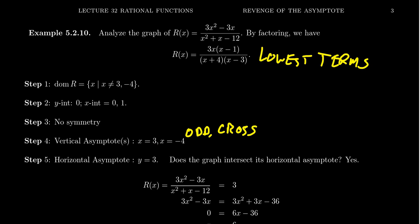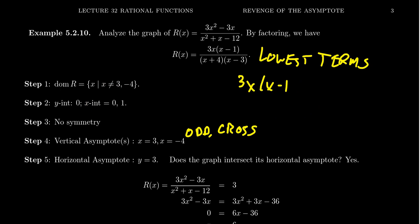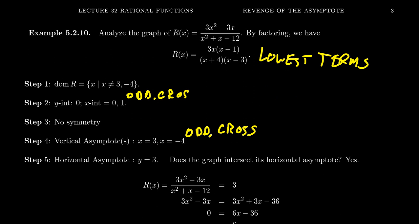For the x-intercepts, we set the numerator 3x(x - 1) equal to zero. By the zero product property, we get x = 0 or x = 1. Both x-intercepts have odd multiplicity, so we cross the x-axis at each value. For the y-intercept, r(0) = 0, so the function passes through the origin — the origin serves as both the y-intercept and one x-intercept.